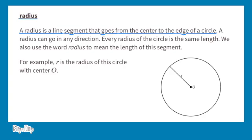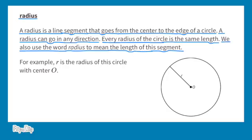Radius. A radius is a line segment that goes from the center to the edge of a circle. A radius can go in any direction. Every radius of the circle is the same length. We also use the word radius to mean the length of this segment.